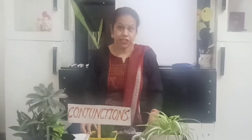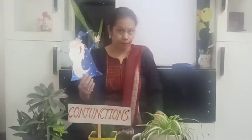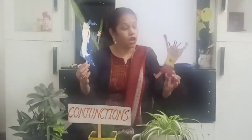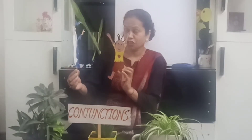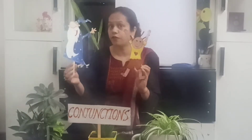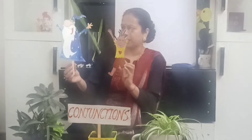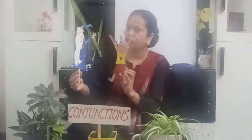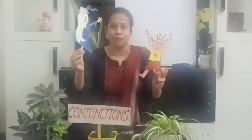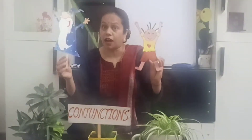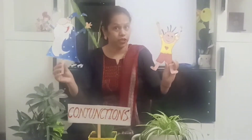Do you know, children, one day what happened? One day a boy came to him, came to Conjunction, and said, 'Conjunction, you can join everything together. So can you join two sentences for me?' Conjunction said, 'I am a magician and I can join everything.'